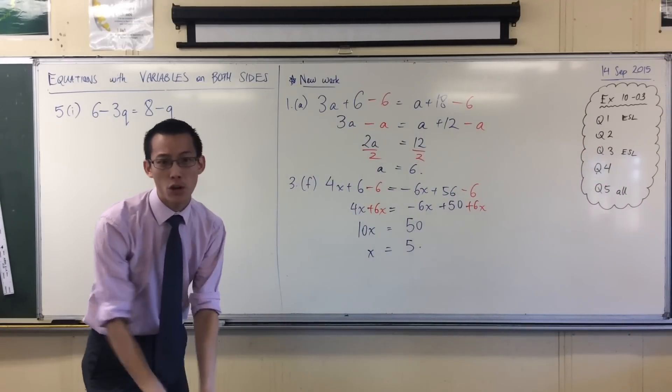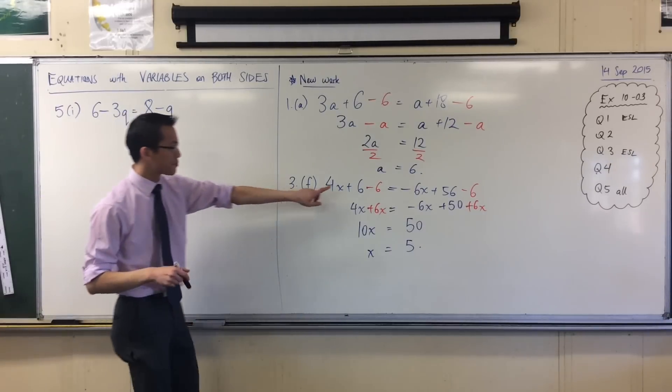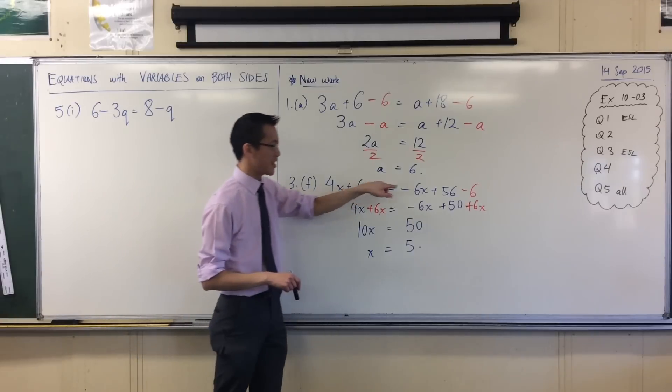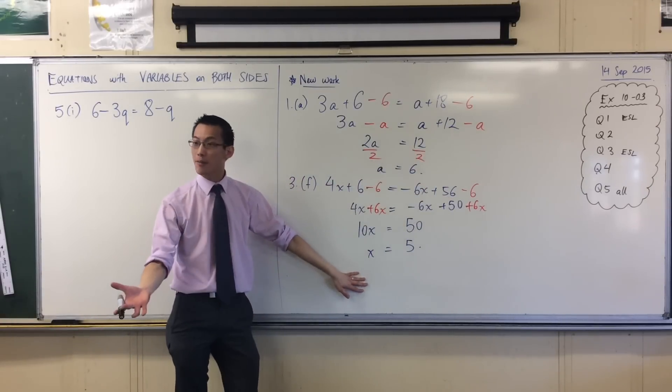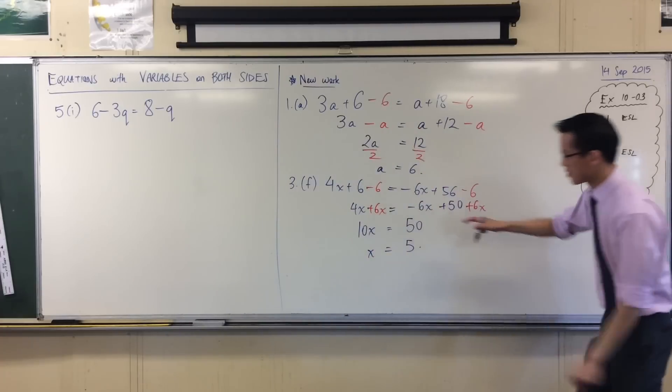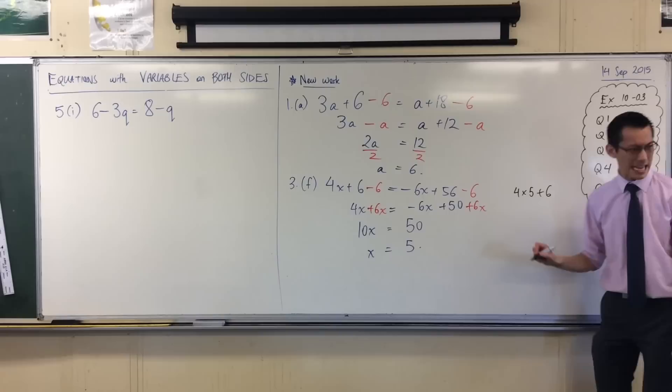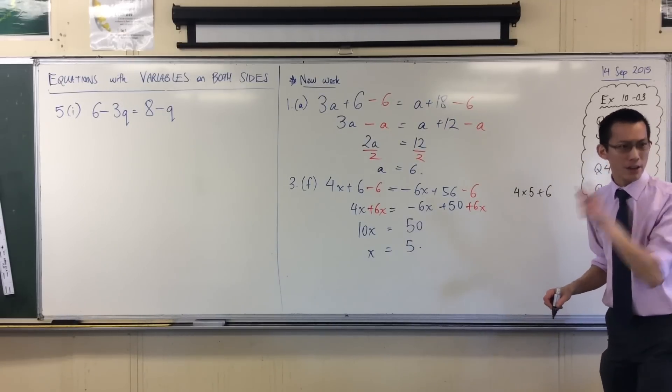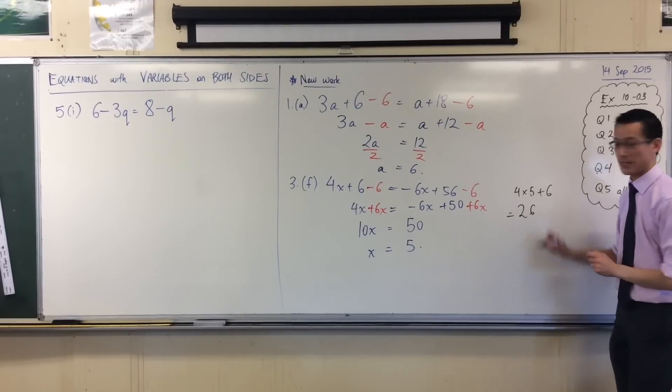Now let's just double check because a few people have got different answers. Let's make sure we know that that works. Over here, on the top line, 4x plus 6 and minus 6x plus 56. Let's see if 5 works out. For instance, 4 times 5 plus 6. Order of operations. Which one do I do first? You do times. I do times first. So that becomes 20 and then I add 6.